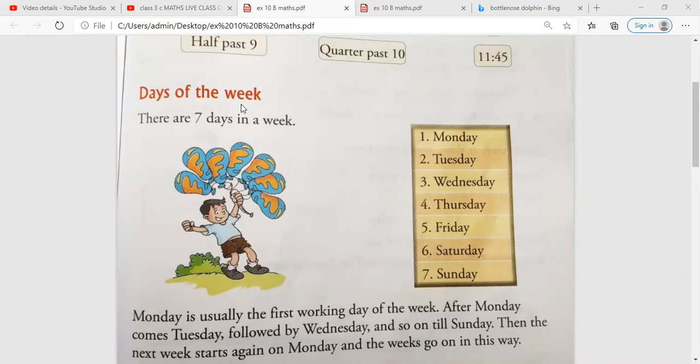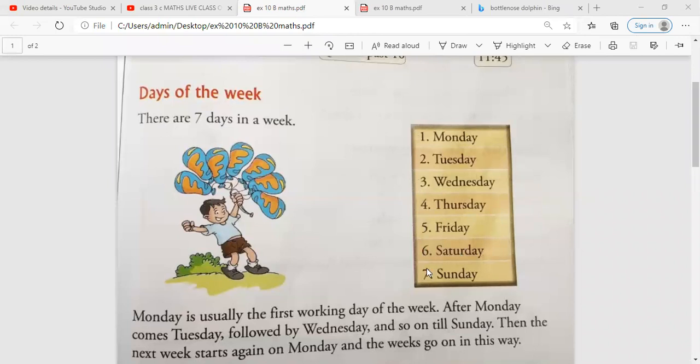One month has four weeks. So each week has seven days. There are seven days in a week. Monday to Sunday, this is one week.